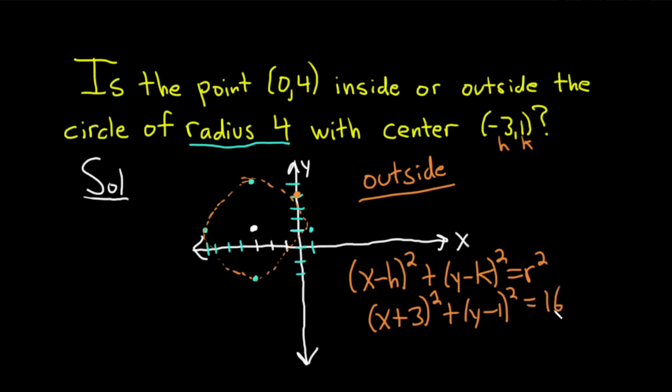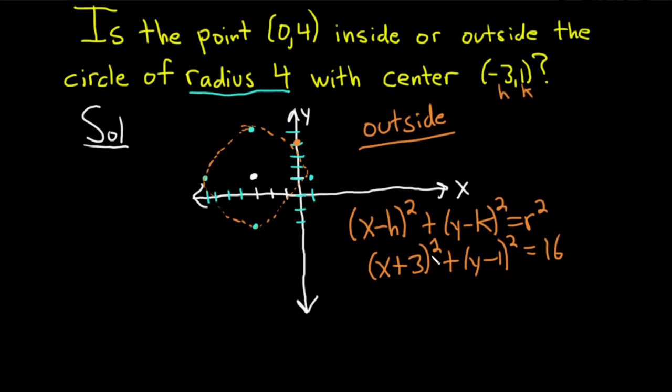So this is the equation of the circle that we've attempted to draw, which is a really bad circle. And points that satisfy this equation are on the circle.